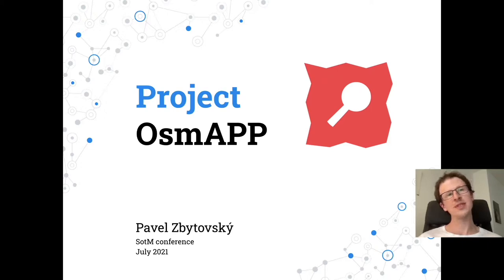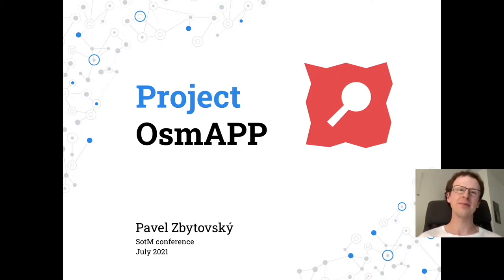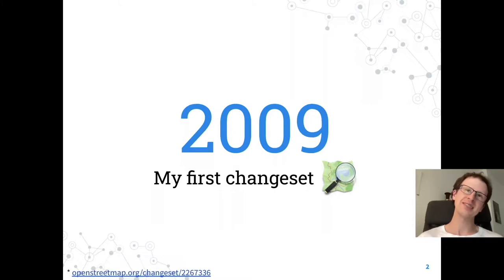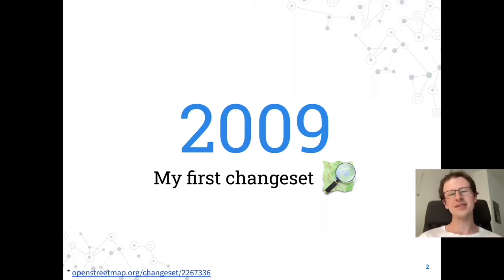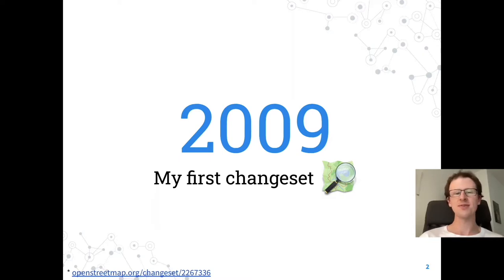Hello, my name is Pavel Zbitovsky and I would like to tell you about my dream - a dream about an integrated OpenStreetMap app experience. You can think of it as Google Maps but with OSM data. It all started in 2009 when I downloaded free maps for Garmin for my trip to the sea. I was surprised there was a missing gas station and even more surprised when I found out that I could add it. A year later I created the first version of an OSM app.